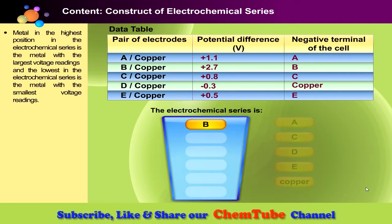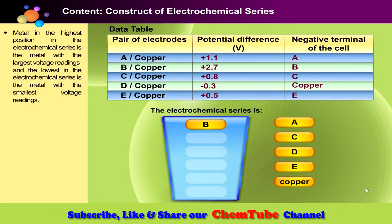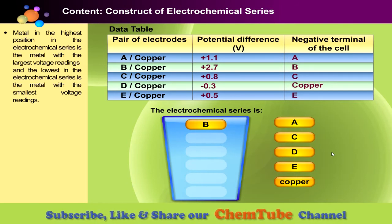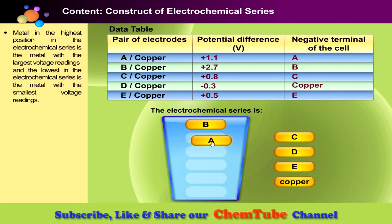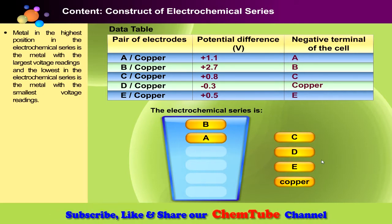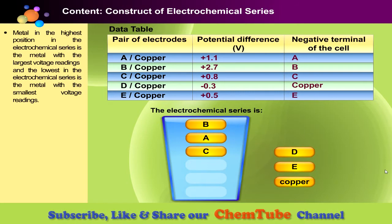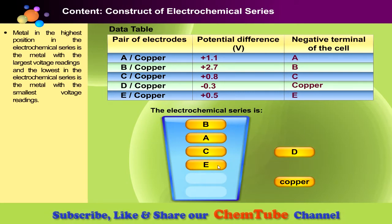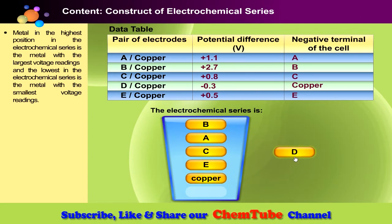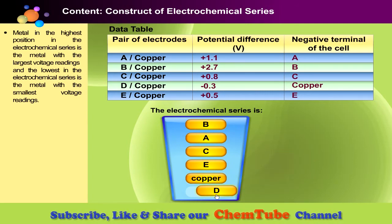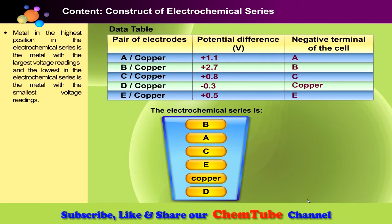Now, click and drag metals A, C, D, E, and copper to complete the electrochemical series. Well done! You have successfully constructed an electrochemical series.